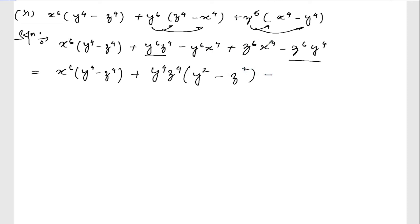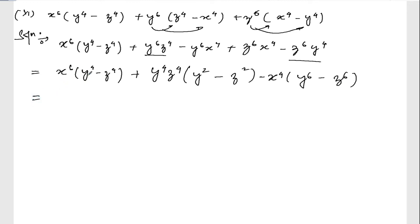From the remaining two terms, let us take minus x to the power 4 as the common factor. If I take minus x to the power 4 common, what is left out is y to the power 6 minus z to the power 6. So we have x to the power 6 into y to the power 4 minus z to the power 4, and all these terms.